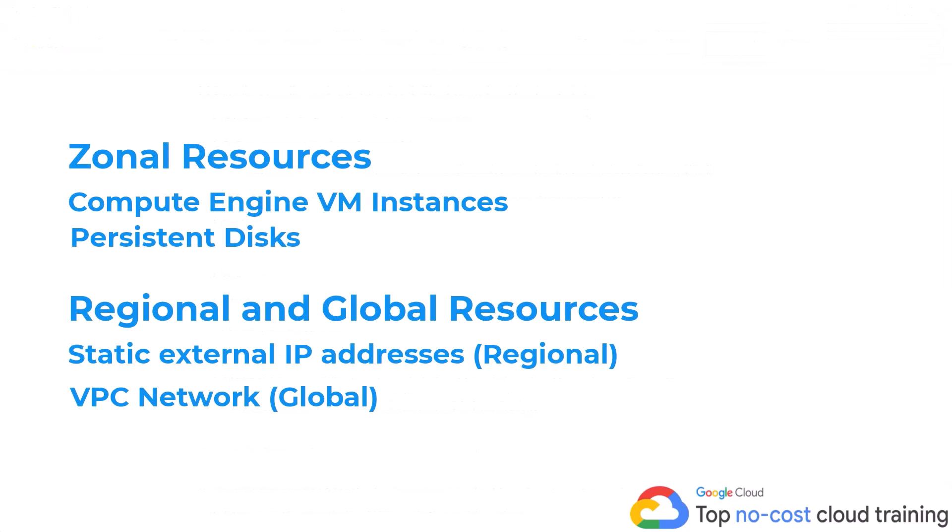Let's talk about zonal resources first, because these are very common. You'll come across them frequently when using Google Cloud, especially Compute Engine virtual machines, because those are zonal resources — they exist in the particular zone you create them in. The persistent disk, which is the hard drive where you store information for those VMs, also stays within that zone. For regional and global resources, static external IP addresses can be regional — created for an application and accessed directly in that region.